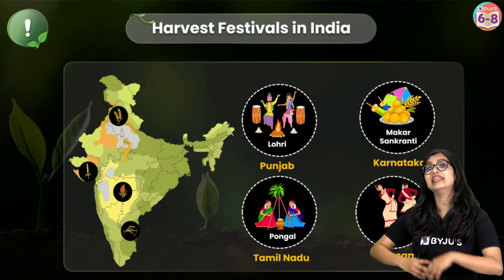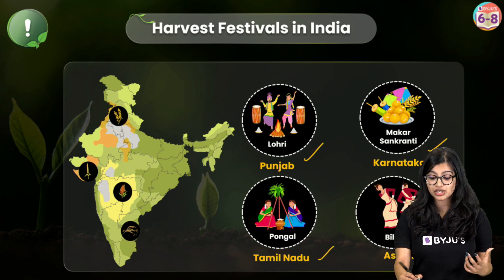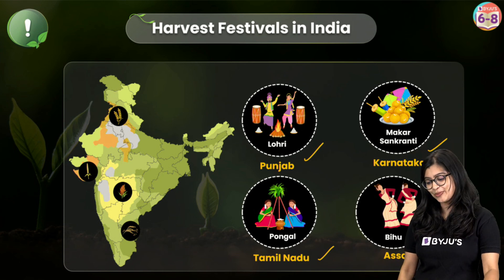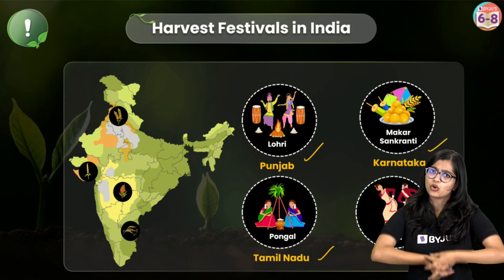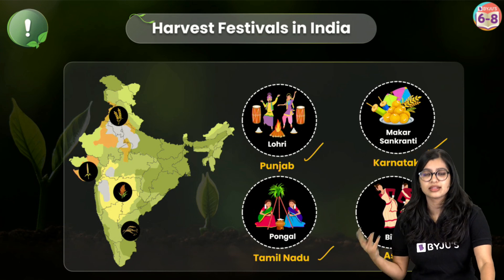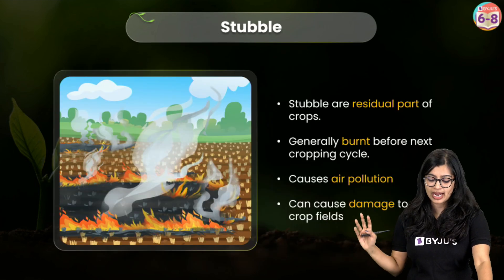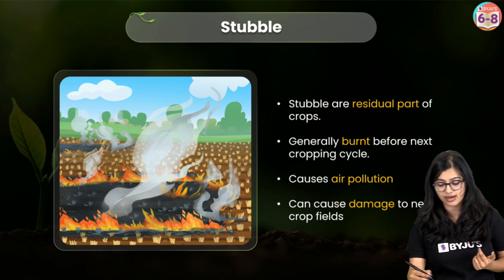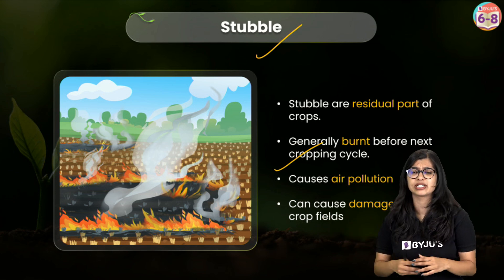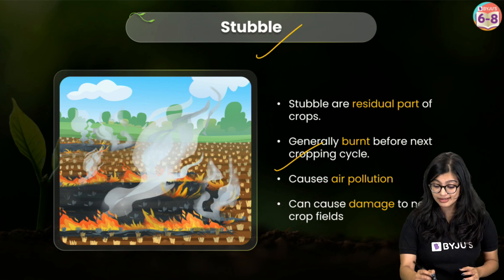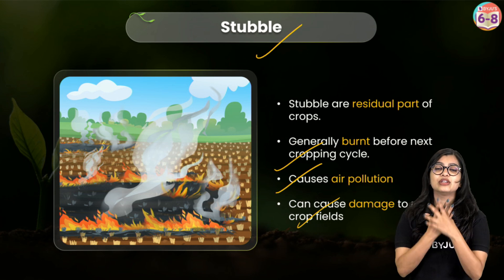When harvesting takes place, we have many harvest festivals in our country. Different parts of India celebrate differently — like Lohri in Punjab, Pongal in Tamil Nadu, Makar Sankranti in Karnataka, and Bihu in Assam. Now the residual part of the crop that we don't require is called stubble. Normally it is burnt before the next cropping cycle, but this is not ideal as it causes air pollution and can damage crop fields. We are trying to move toward better practices where every part of the crop is used sustainably.